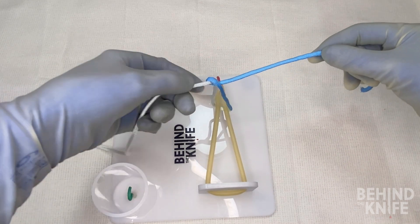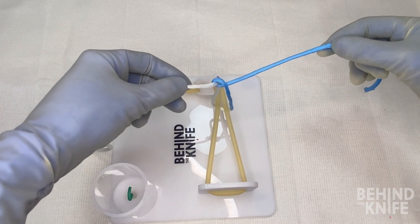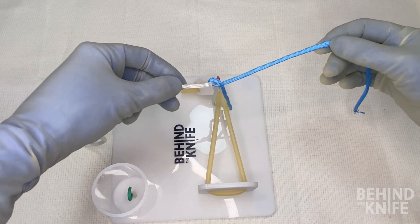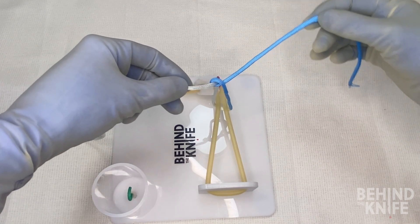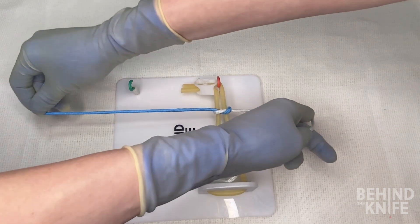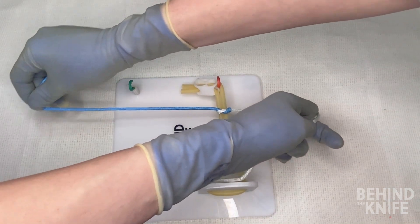Now if you notice, this isn't exactly a square knot. If we didn't cross our strings in the beginning, what we'll have to do is cross our hands here, so I'll cross my hands down to lay a nice square knot.